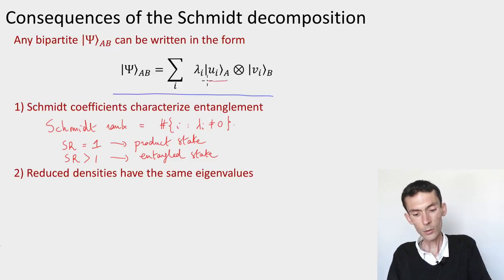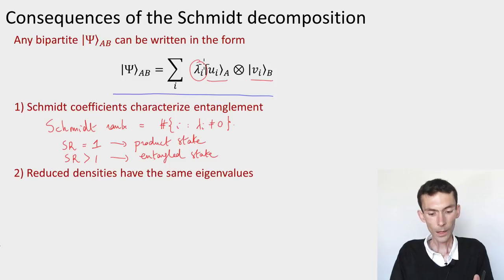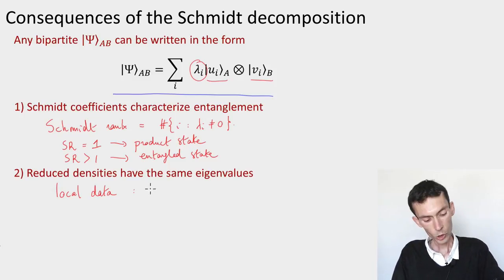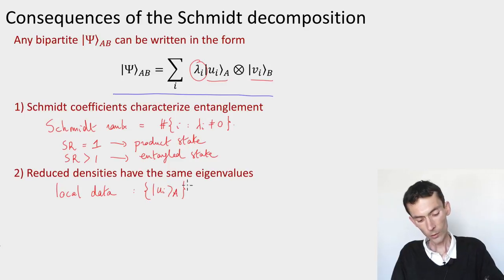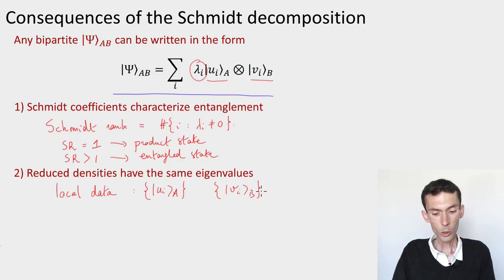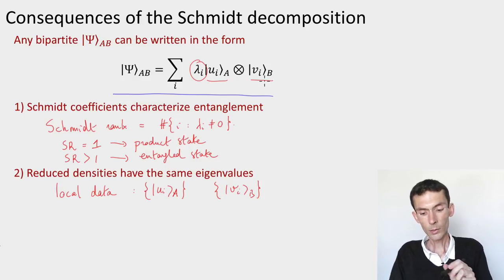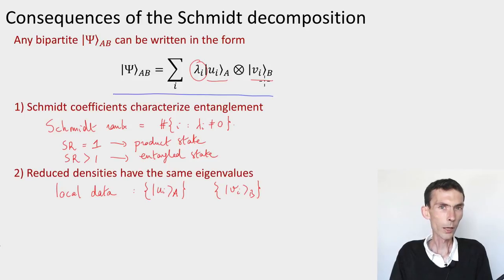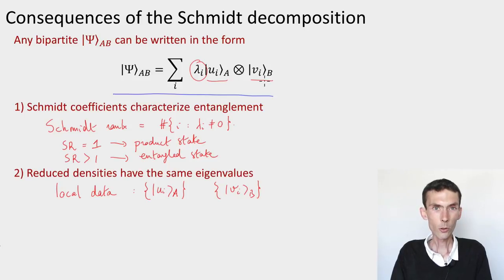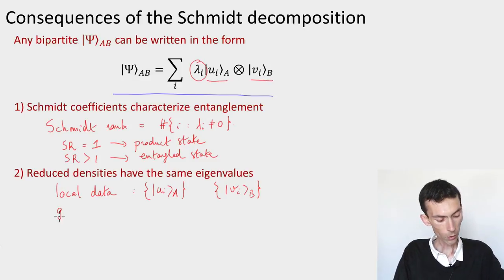Another interesting thing the decomposition reveals is that it splits the information about the state into three parts: a basis for A, a basis for B, and coefficients linking these bases. The Schmidt bases are local data — you can change them by acting only locally. Applying a unitary on system A maps the u_i basis to another basis without affecting the Schmidt coefficients or the B basis. The Schmidt coefficients, by contrast, cannot be changed by local operations — they are global data.